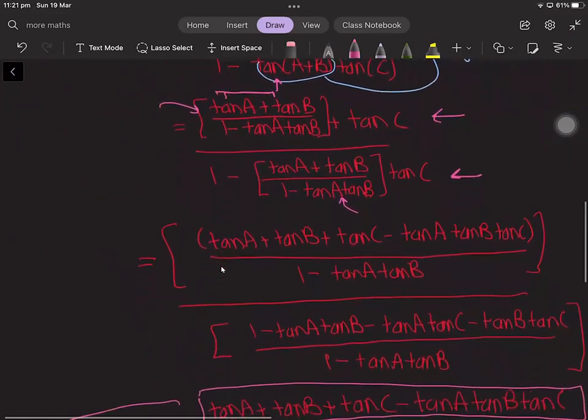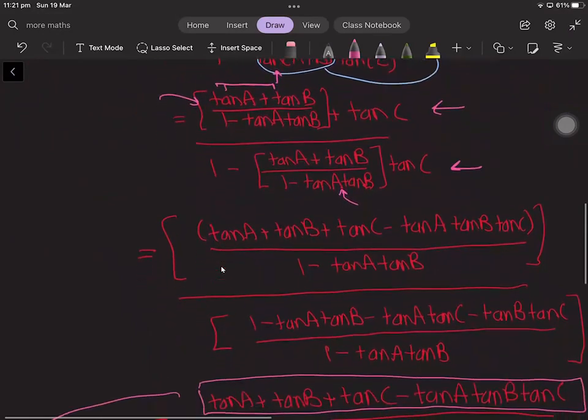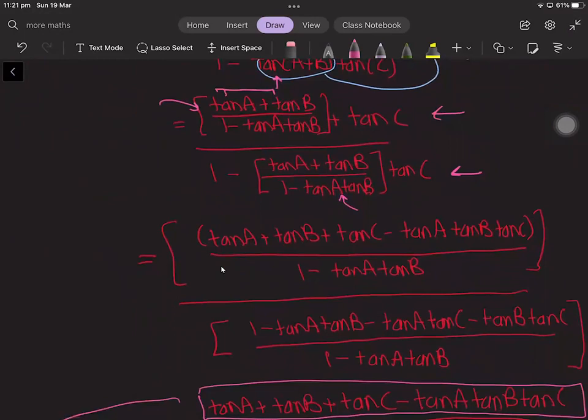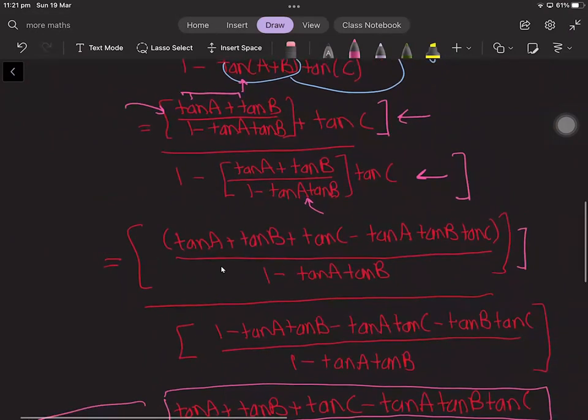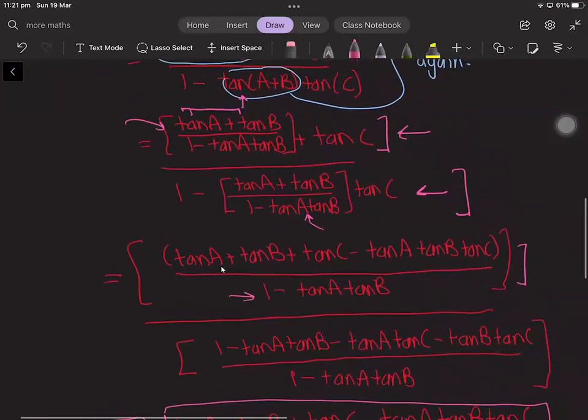Actually, before we do that, we can bring this fraction and this fraction under a common denominator. So we can bring it under the common denominator of 1 - tan(A)tan(B). Here we are multiplying tan(C) by 1 - tan(A)tan(B) to get tan(C) - tan(A)tan(B)tan(C), and we still have the tan(A) + tan(B) here.